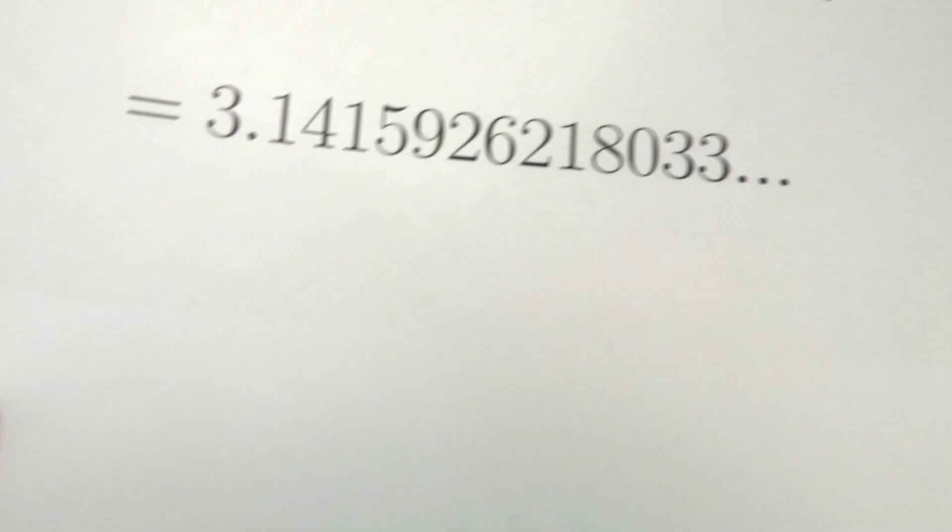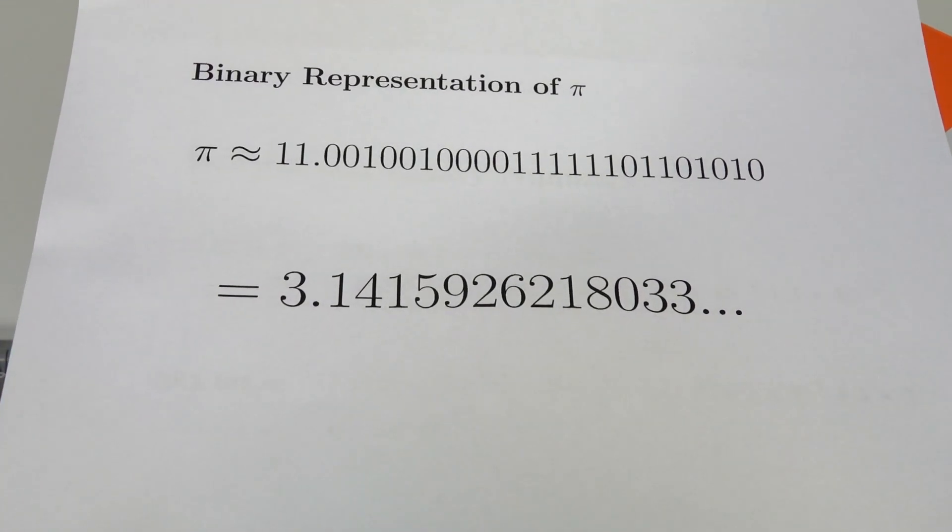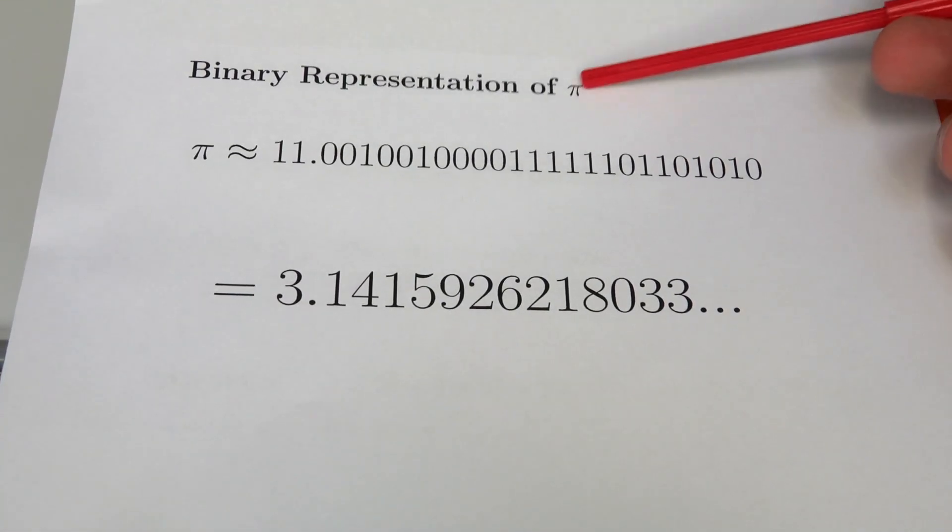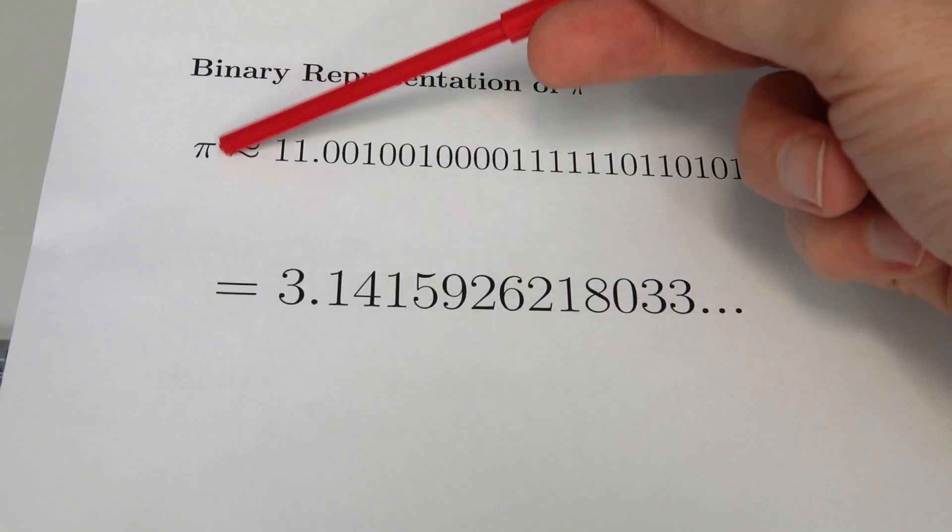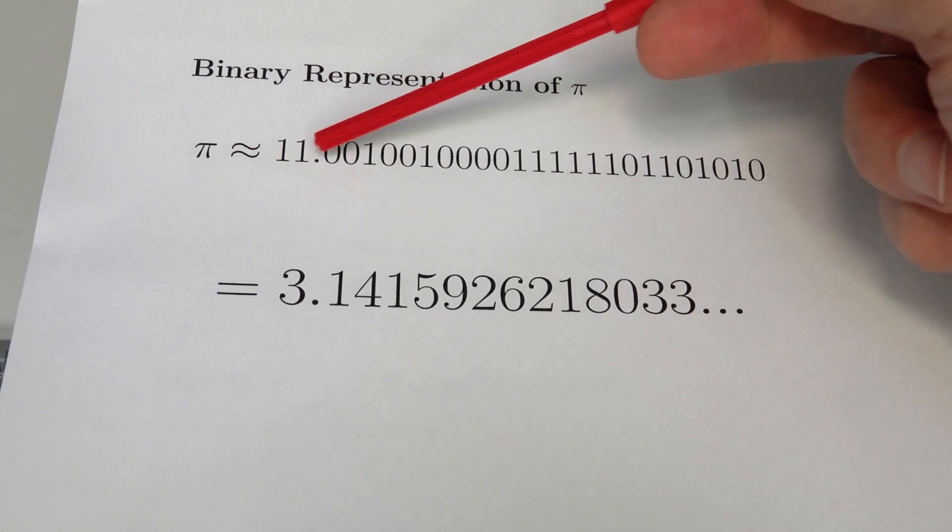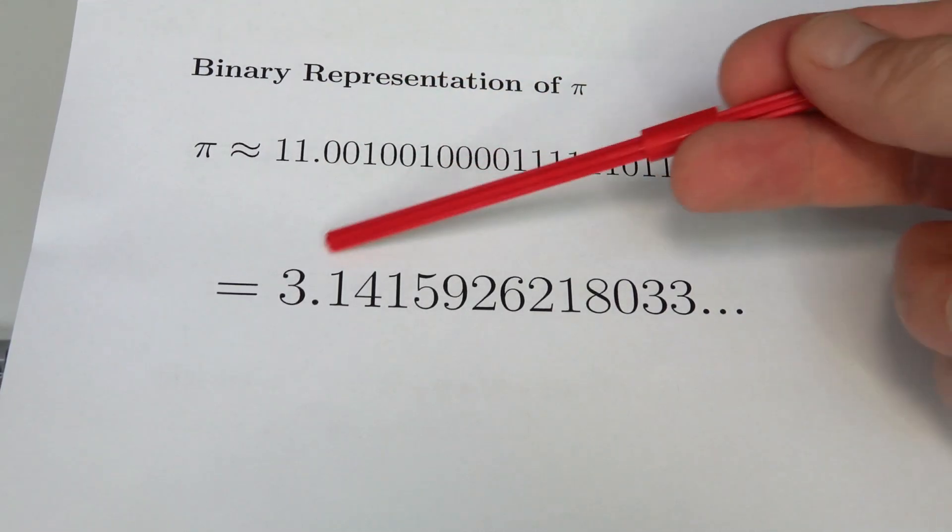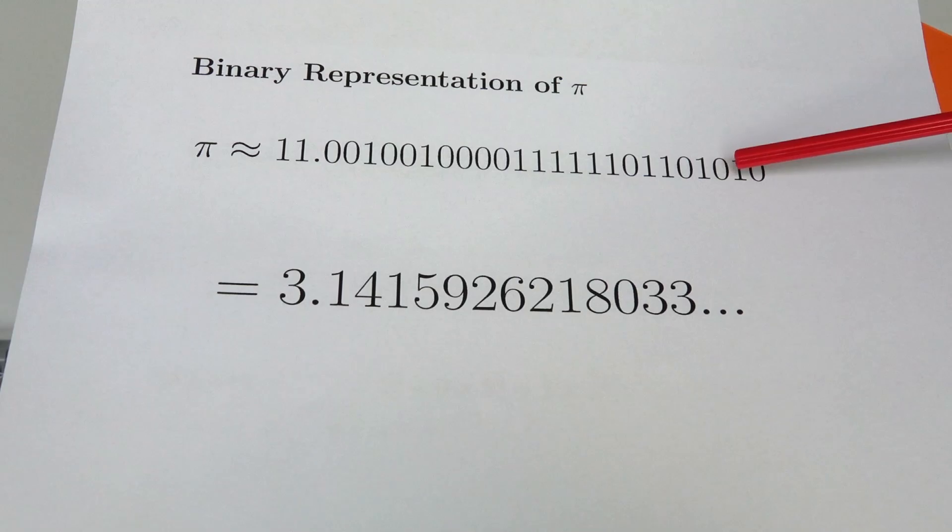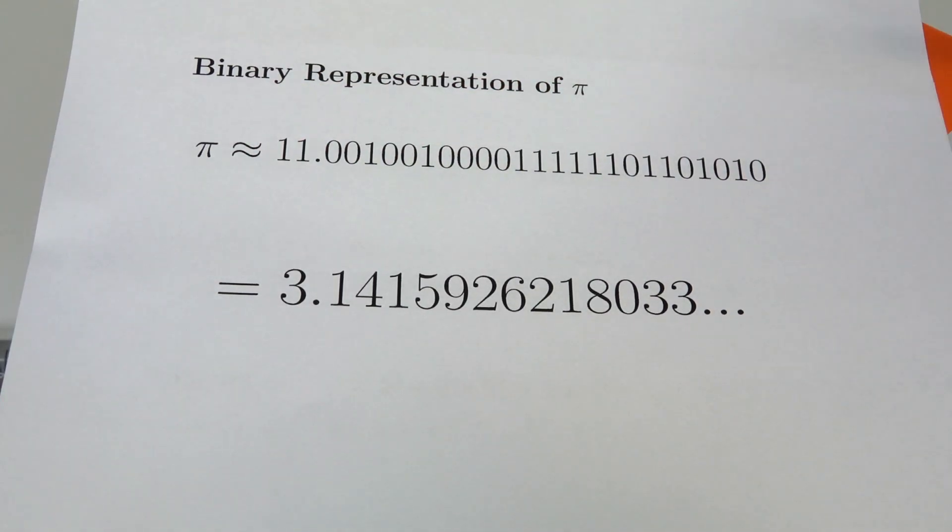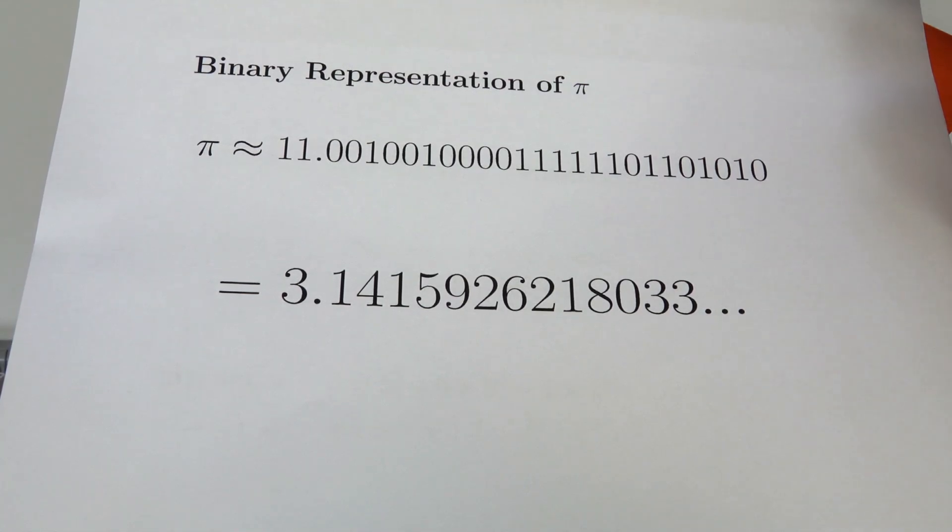So what is Pi as a binary number? Here it is. This is the binary representation of Pi. In binary, Pi is approximately equal to 11.001001 and so on with lots of digits. Just like Pi in decimal, this is an irrational number, which means the digits go on forever. This is about the first 24 digits in binary.